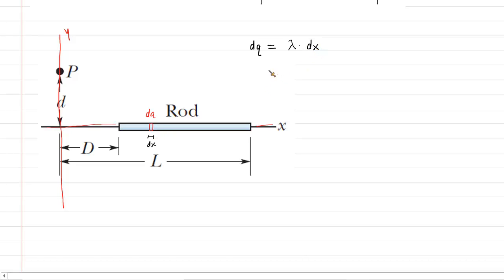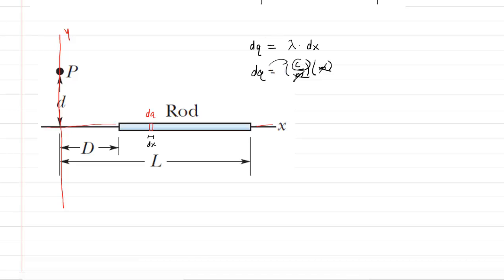To see why this makes sense, recall that the linear charge density has units of coulombs per meter. The length of our little charge element dx has units of meters. When you multiply coulombs per meter by meters, the meters cancel, leaving you with just coulombs. That is consistent with our claim that the little charge element has a small amount of charge dq measured in coulombs. So this relationship hopefully makes sense.